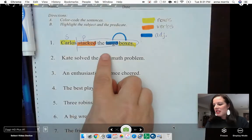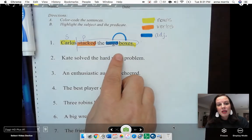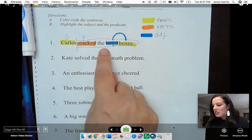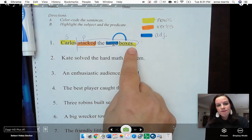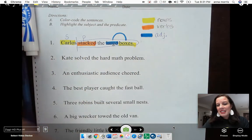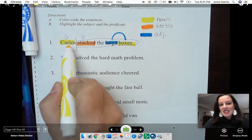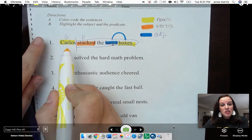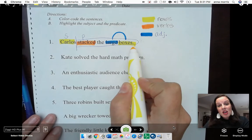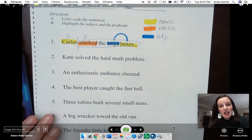In our last video, we coded a sentence that was similar to this one. Carlos stacked the large boxes. We started by finding our nouns. Carlos is a noun because it's a person. Boxes is also a noun, something that we can touch.